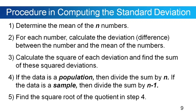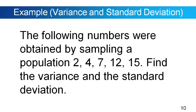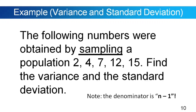Let's have an example. The following numbers were obtained by sampling a population: 2, 4, 7, 12, 15. Find the variance and the standard deviation. Now, is our data set a sample or a population? It is a sample, because of the phrase 'sampling a population.' So the denominator in our formula should be n minus 1.